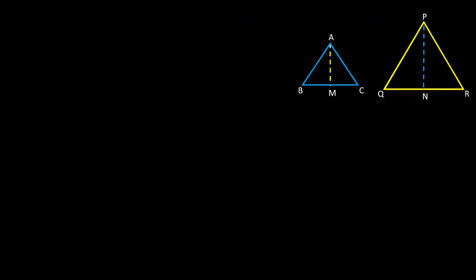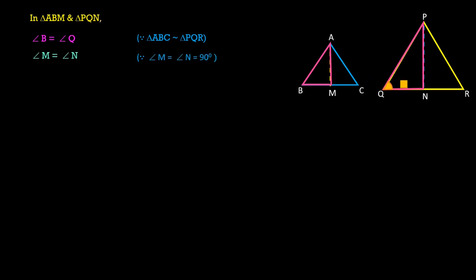For that, I am considering the two triangles ABM and PQN. To show that these two triangles are similar, we show that two corresponding angles are equal. Given angle B equals angle Q, and angle M equals angle N, since we constructed the altitudes perpendicular to the bases. According to AA criteria, triangle ABM is similar to triangle PQN.